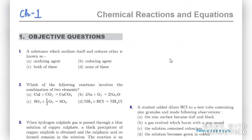The first question says: a substance which oxidizes itself and reduces others is known as — oxidizing agent, reducing agent, both of these, or none of these? The right answer is reducing agent. A reducing agent is the one which oxidizes itself and reduces others.